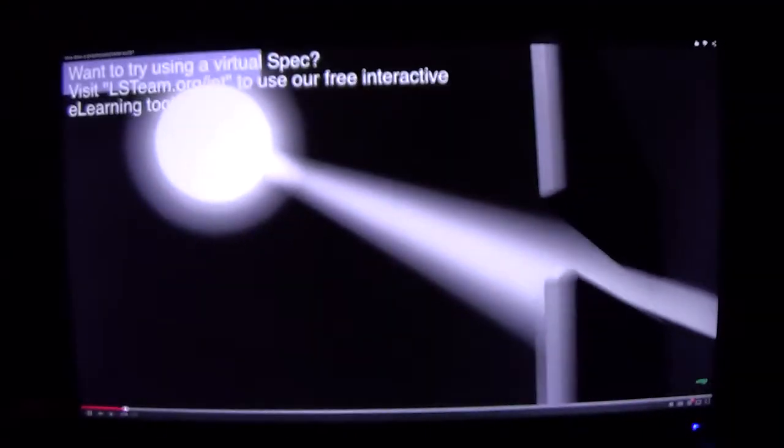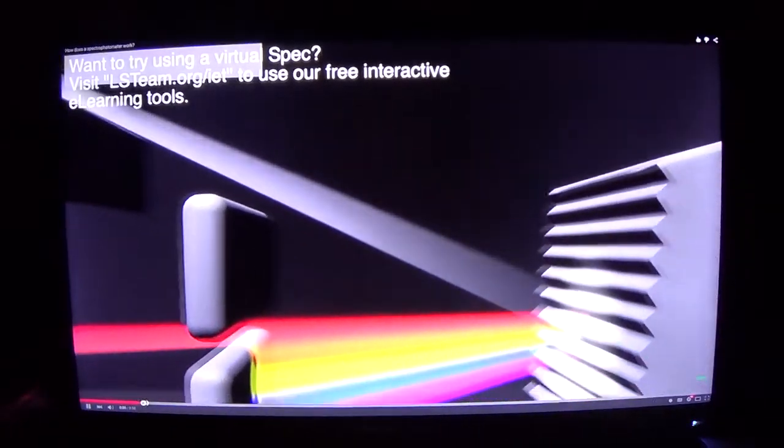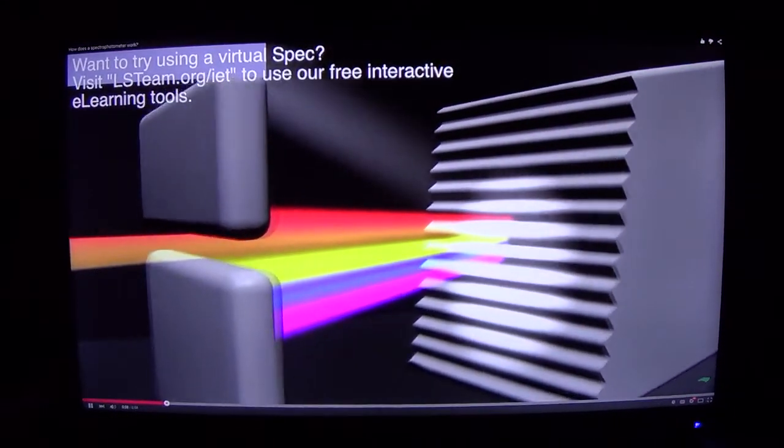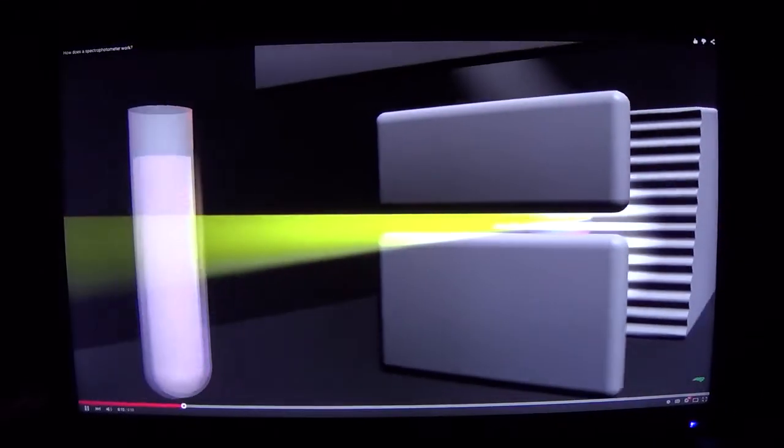Here's how a spectrophotometer works. A lamp provides the source of light. The beam of light strikes the diffraction grating, which works like a prism.